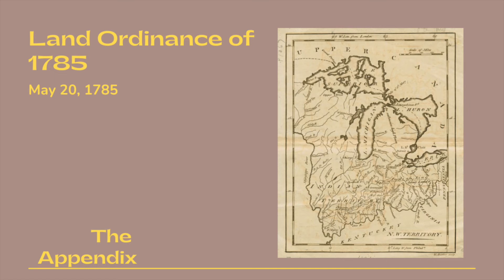Welcome to the Appendix, where we read the primary sources of the past so the present can be better understood. Today's primary source is the Land Ordinance of 1785, May 20th, 1785, which comes to us from the Journals of the Continental Congress, edited by J.C. Fitzpatrick. This Land Ordinance laid the foundations for the public land system, followed in most essentials until 1862, with particular importance placed on provisions reserving certain lands for educational purposes.